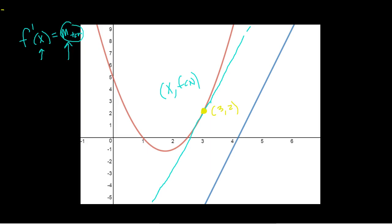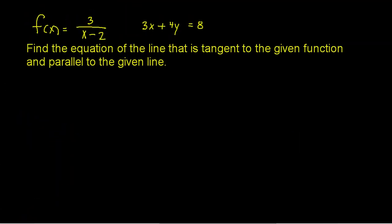Pretty nice process — a little tricky. It involves a little bit of thought process, but it's not too hard. Let's do one more. Another function: 3 over x minus 2. Another line: 3x plus 4y equals 8. I'm asked to find the equation of a line that is tangent to the given function and also parallel to the given line. This might be a little bit tricky because it's a harder function, but same process.